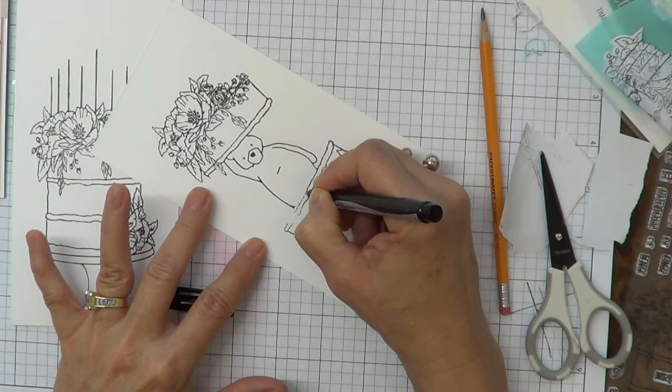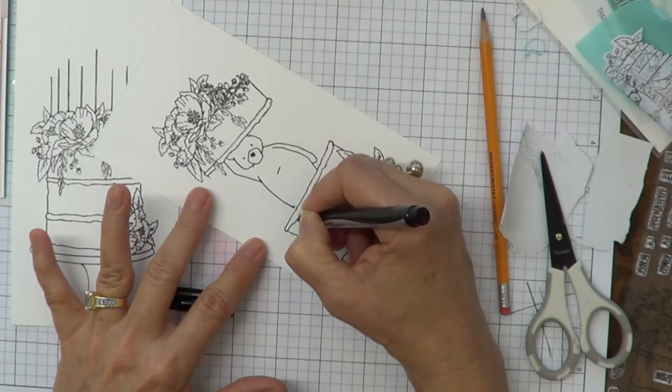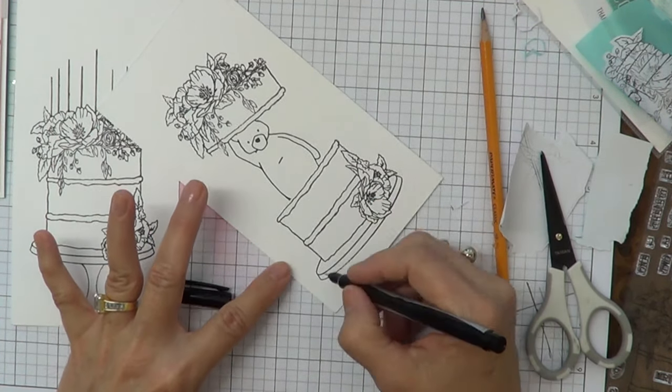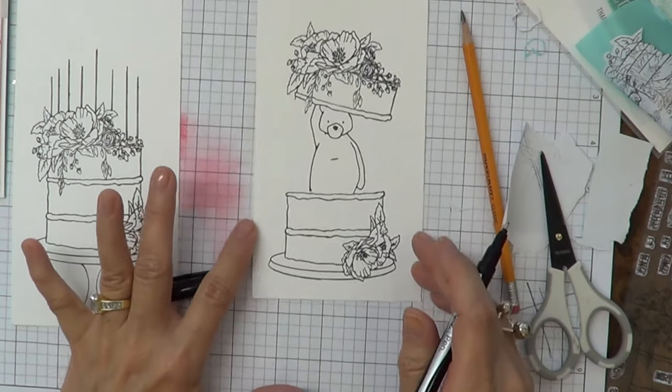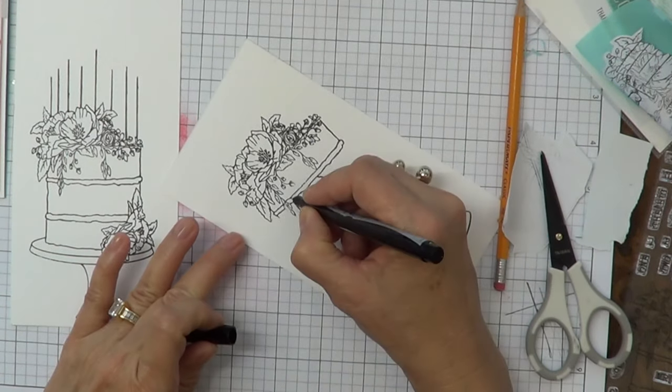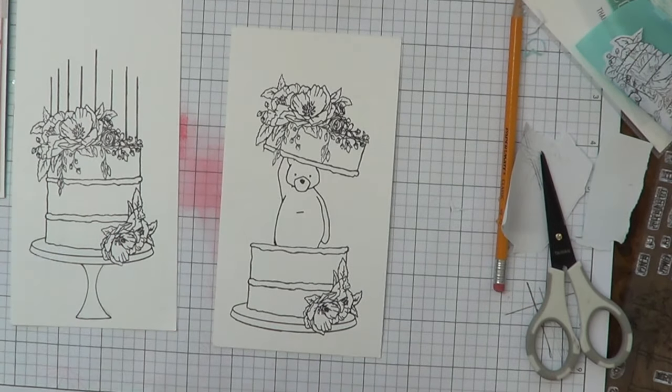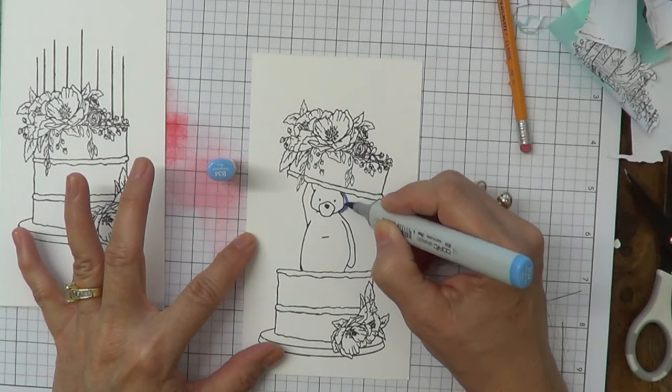And by the way, I'll list all the supplies in the description that I'm using. And I'll have a lot more information on my blog, the daily marker.com. So hopefully you'll pop over there. There's going to be a giveaway from Concord and ninth. And I hope you check it out.